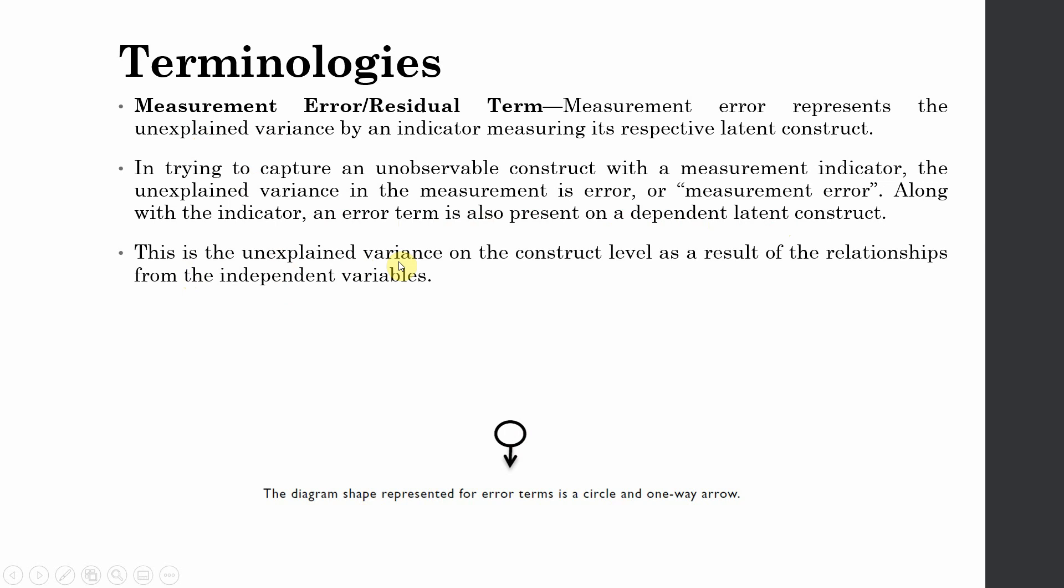This is the unexplained variance on the construct level. When you add your error term to the dependent variable, this is your unexplained variance on the construct level. Whereas earlier, if it is with the indicator, it is unexplained variance on the indicator level.